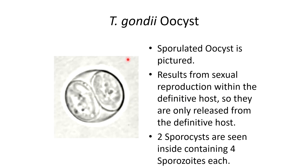Here's an image of a T. gondii oocyst — this is a sporulated oocyst. You can tell it's sporulated because you can see the two sporocysts or sporoblasts inside the oocyst, and then inside each sporocyst there are four sporozoites. This results from sexual reproduction occurring within the definitive host, the cat. Only the definitive host is going to release oocysts.